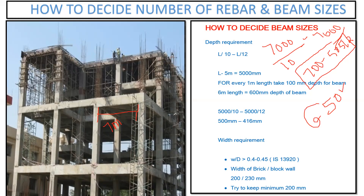Usually all these things are decided by the structural engineer, but when the structural engineer decides, he applies the very same formula. Based on that he tries to do the design with ETABS software and then provides all the details. But we can always depend on this formula to judge — you can give the depth of the beam as 600 or 650 mm and it is sufficient to carry the load.